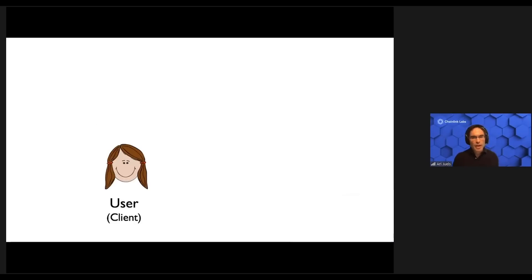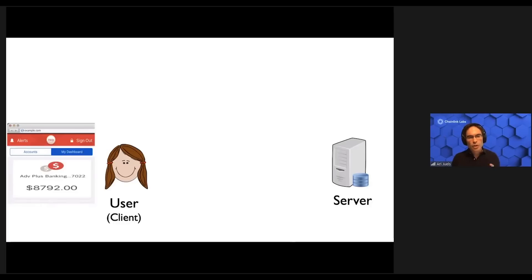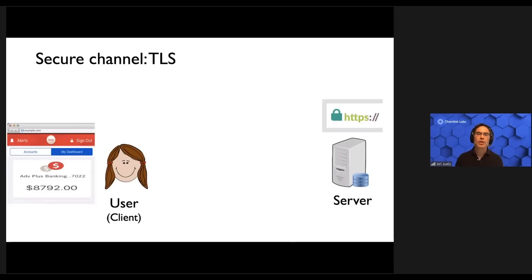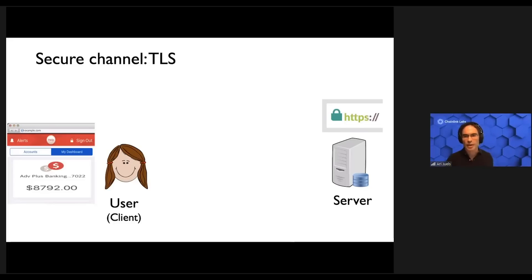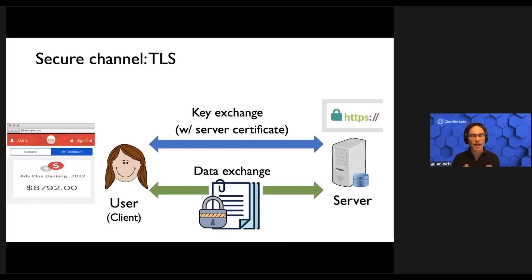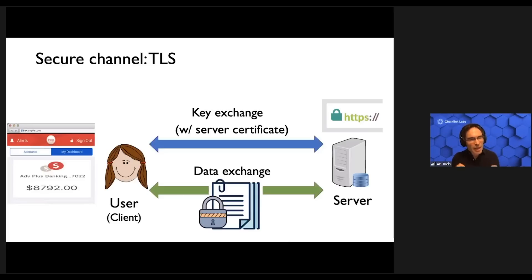We observe that when Alice logs into her bank's website, she's almost certainly using HTTPS, which means she's establishing a secure connection with the bank via TLS — the protocol used everywhere on the internet to secure data. In TLS, the server presents to Alice a certificate validating its identity and a public key. And in the course of the key exchange protocol, or the handshake, it's digitally signing a message. This is all well and good, especially the use of digital signatures, and it seems like we might somehow be able to leverage TLS to solve our problem of authenticating Alice's bank account balance to Bob.